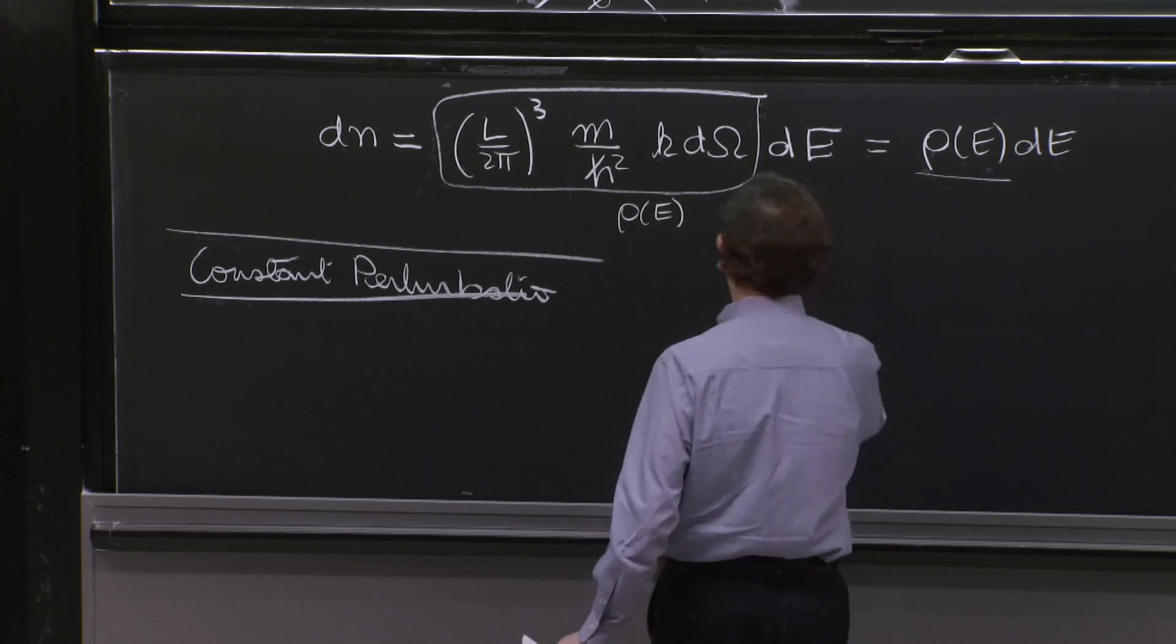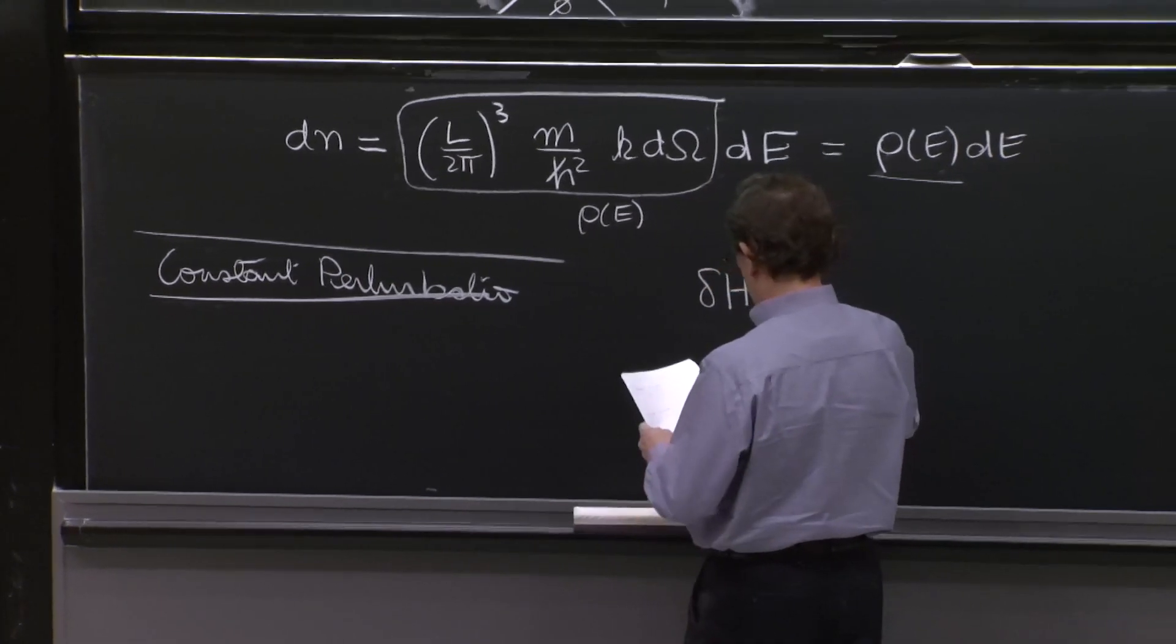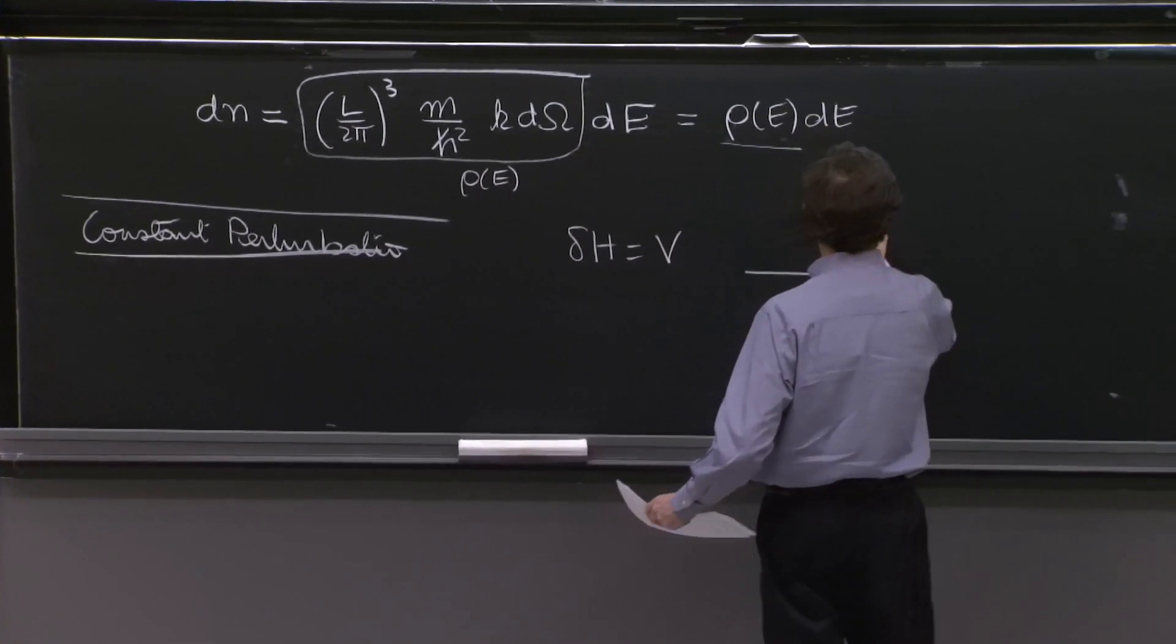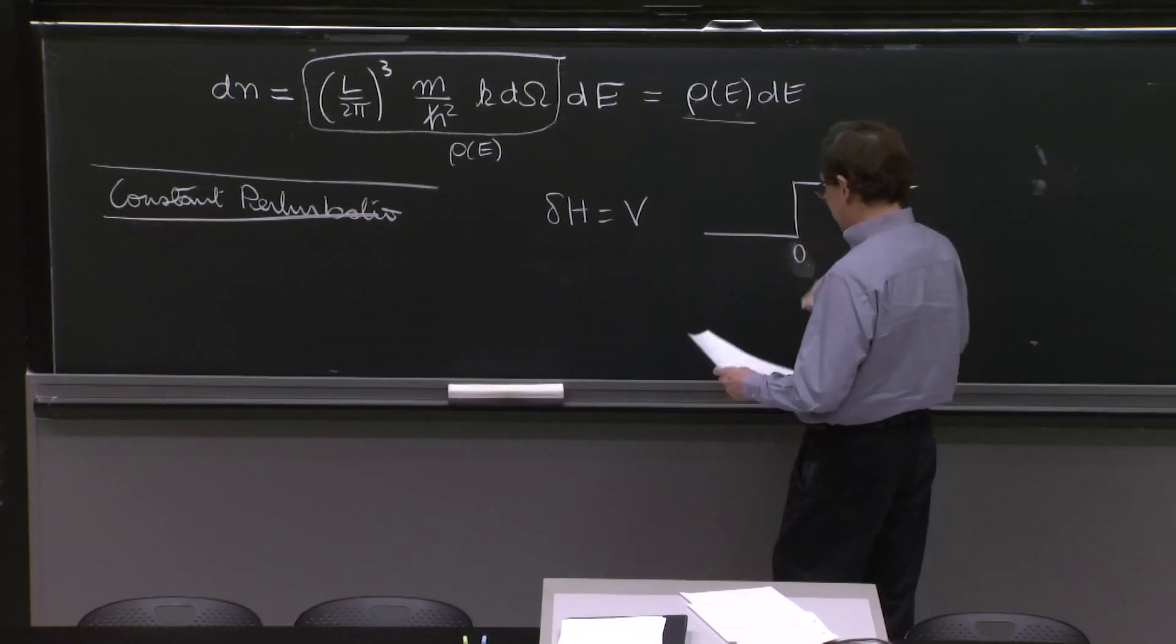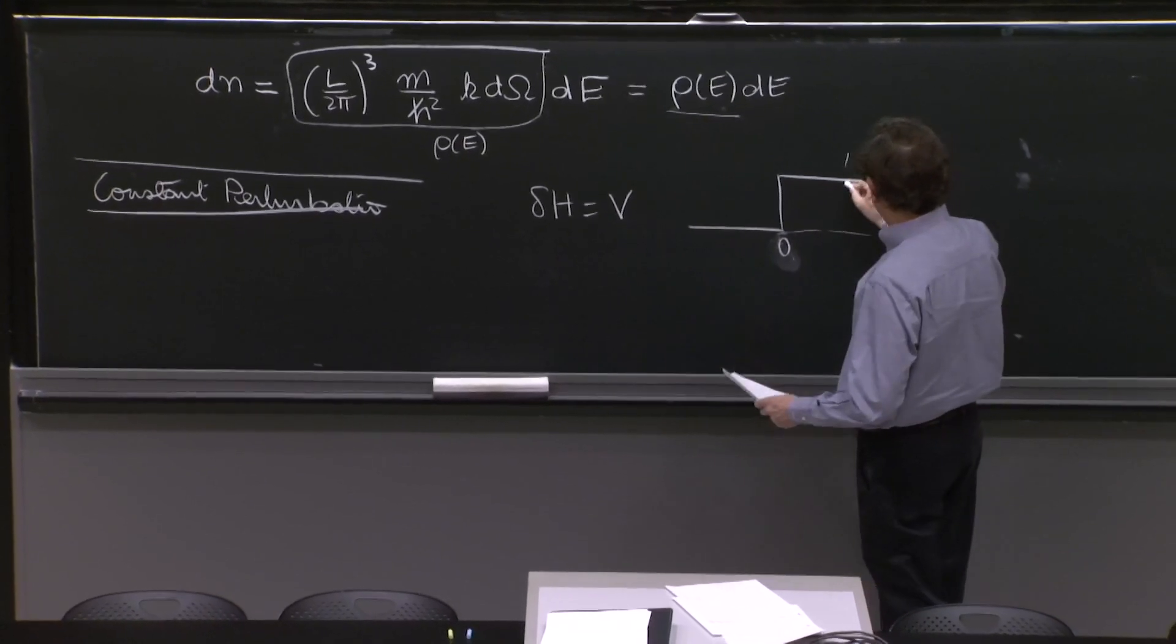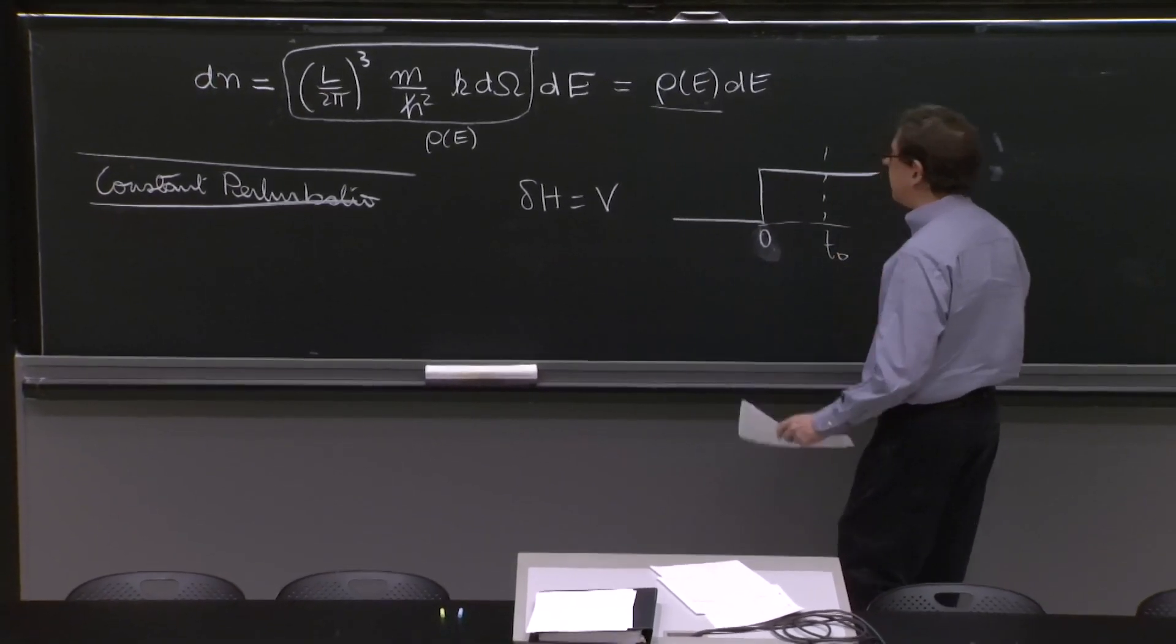So as we said, delta H is equal to v. And it's time independent. It just begins at time 0. And we'll examine what's going on by time t0.